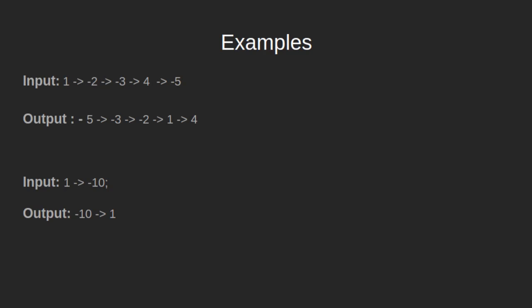Let's see some examples to demonstrate the problem statement. In the first example, we have given a linked list 1, 2, 3, 4, 5. It is already sorted if we take absolute values of all the nodes. After sorting according to actual values, we get the linked list as -5, -3, -2, -1, 4. In the second example, we have given a linked list 1, 10. After sorting, we get -10, 1.